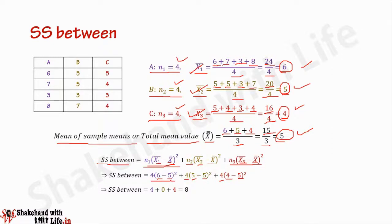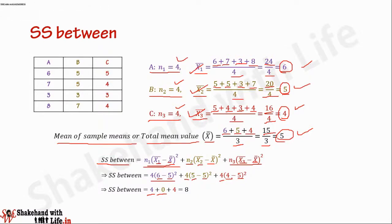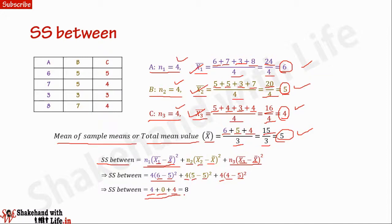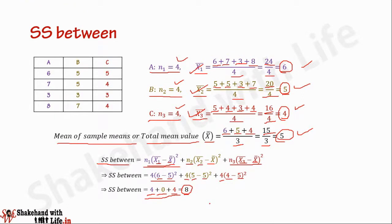So: 4 multiplied by (6 minus 5) squared equals 4 multiplied by 1 squared, which is 4. Then 4 multiplied by (5 minus 5) squared equals 4 multiplied by 0, which is 0. Then 4 multiplied by (4 minus 5) squared equals 4 multiplied by 1, which is 4. Adding 4 plus 0 plus 4, we get 8. Therefore, the sum of squares for variance between the samples equals 8.